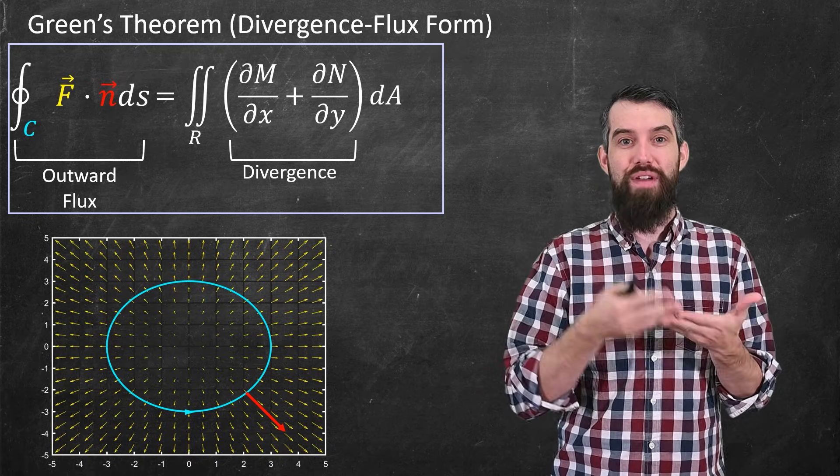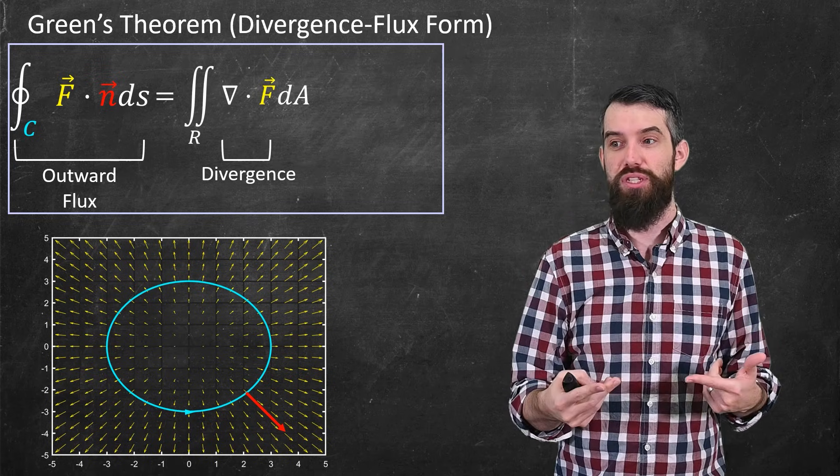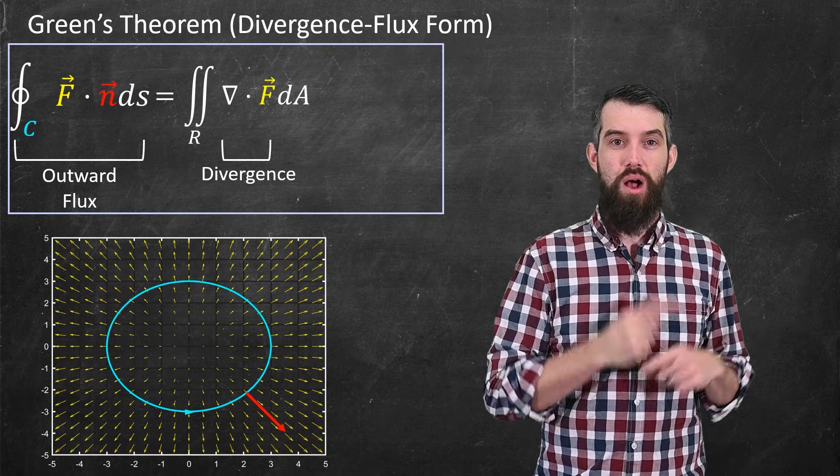Now we get to do something new because we have an improved terminology for talking about the divergence. We saw that del dot F represented the divergence. So I'm just going to replace that in my formula here.